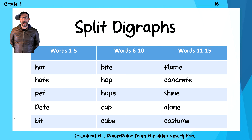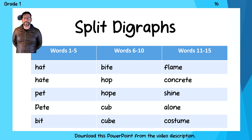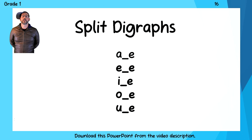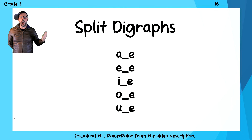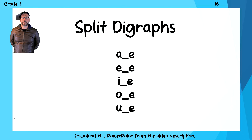Now when you have a silent E at the end of the word, it can jump over one consonant to make the vowel say its name. So usually vowels make their short vowel sound: A, E, I, A, U. But when there's a silent E at the end of the word, it can jump over one consonant to make the vowel say its name.